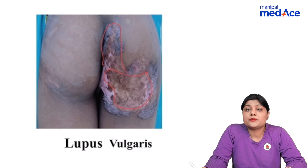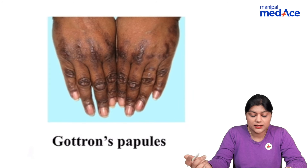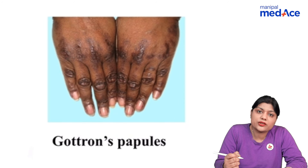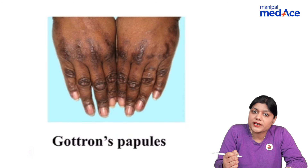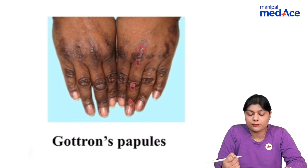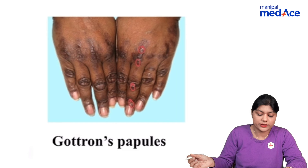Next you can see salt and pepper pigmentation seen in patients of systemic sclerosis. Gottron's papules are pathognomonic of dermatomyositis, in which the patient has lichenoid papules over the proximal and distal interphalangeal joints and metacarpophalangeal joints.